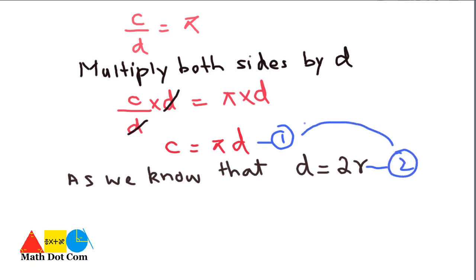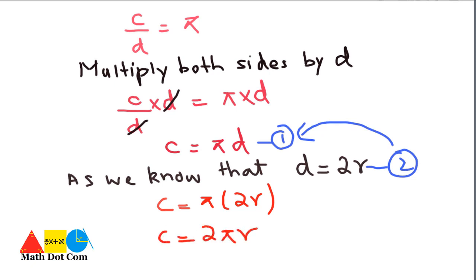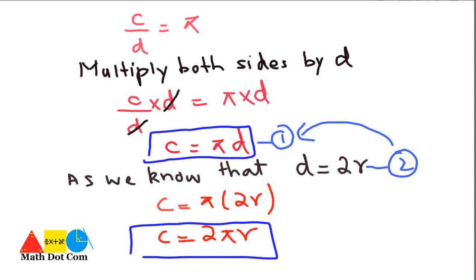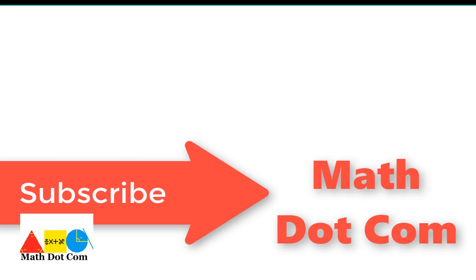Substituting, C equals pi times 2r, which gives us C equals 2πr. This is the required expression showing the relationship between circumference and radius. So equations C equals πd and C equals 2πr are the two key formulas for solving problems involving circumference, radius, and diameter — whenever you are given one value and need to find the others. Thank you for watching. If you liked this video, please subscribe to our channel for more updates.